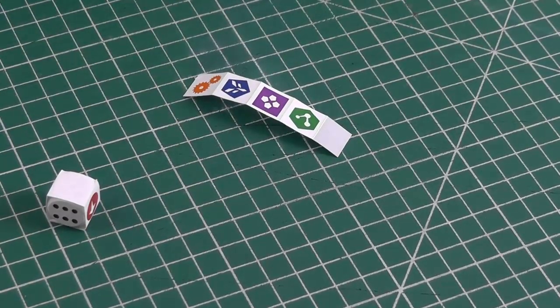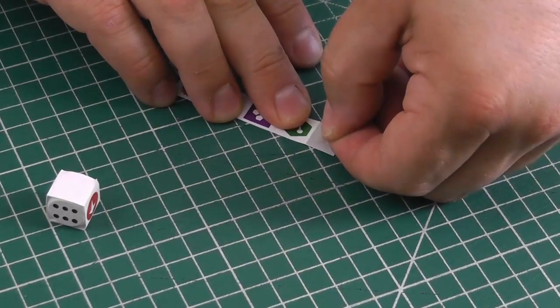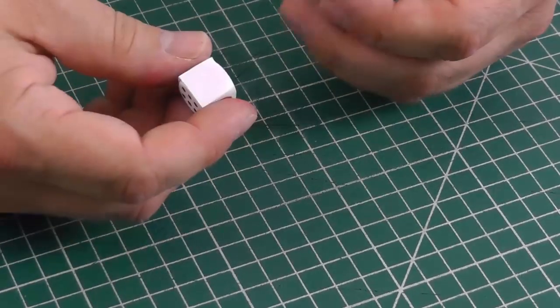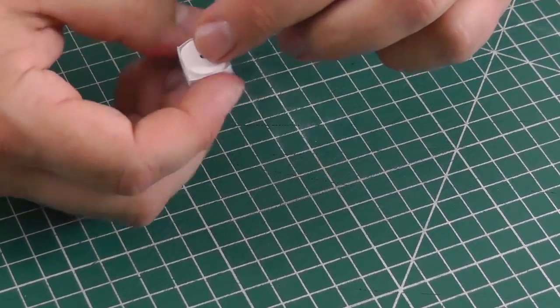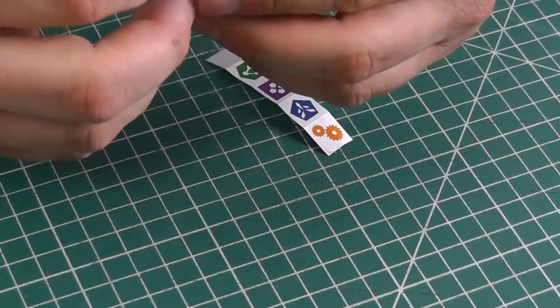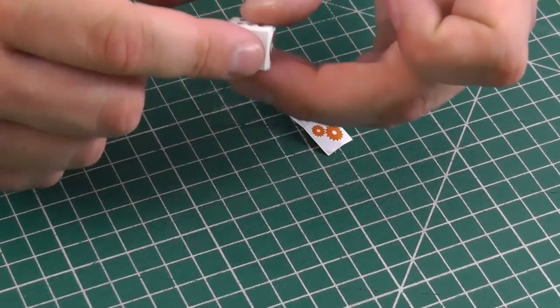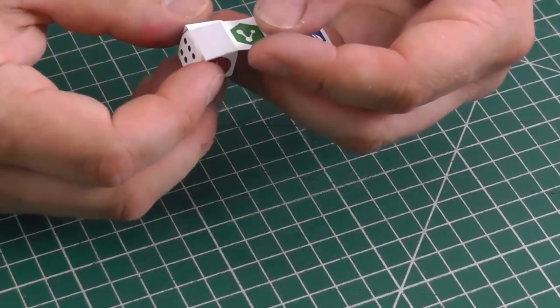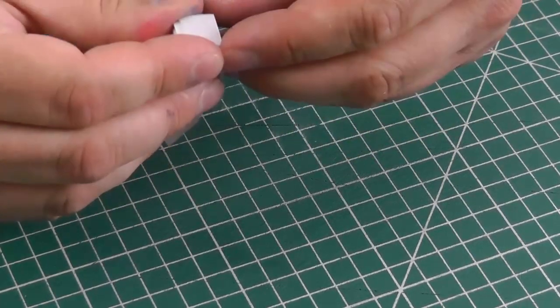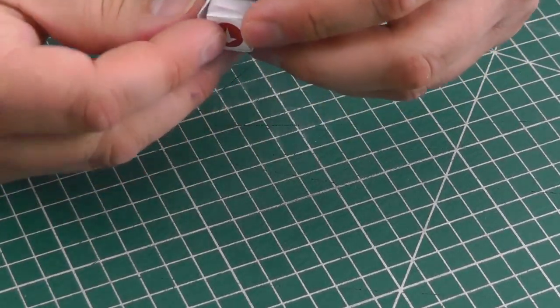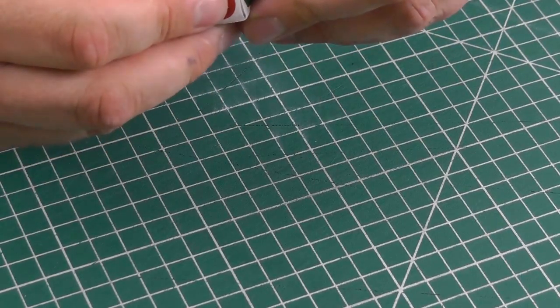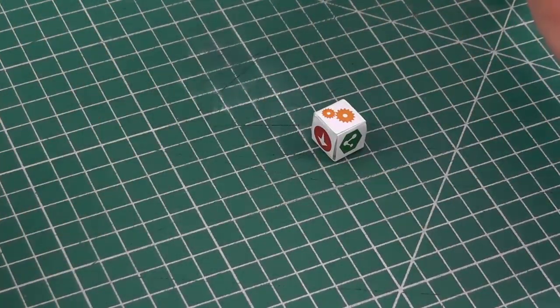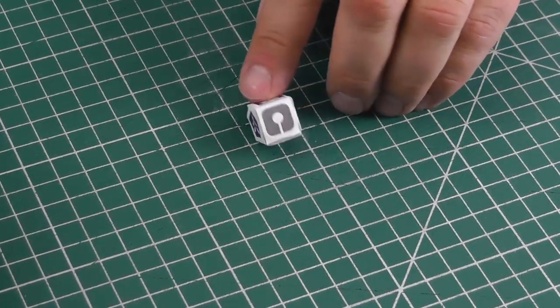Then we do exactly the same with the other strip of paper. This time, we start by wrapping the paper over the two blank faces of our inner strip. If you can, find the face which has the doubling up and start your other strip on the opposite side to balance it out. Wrap the paper all the way around. And there you have a die which has your six custom faces.